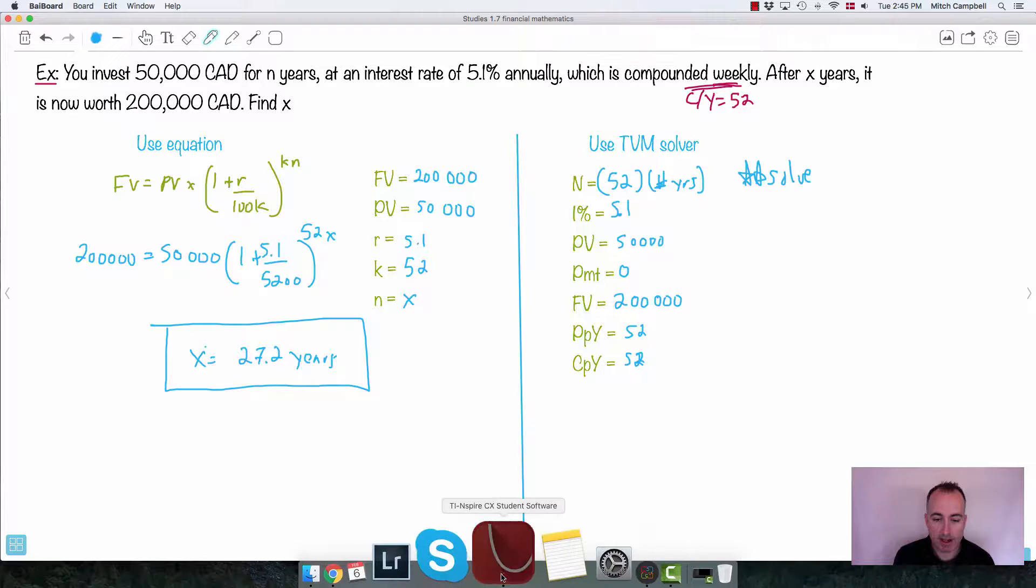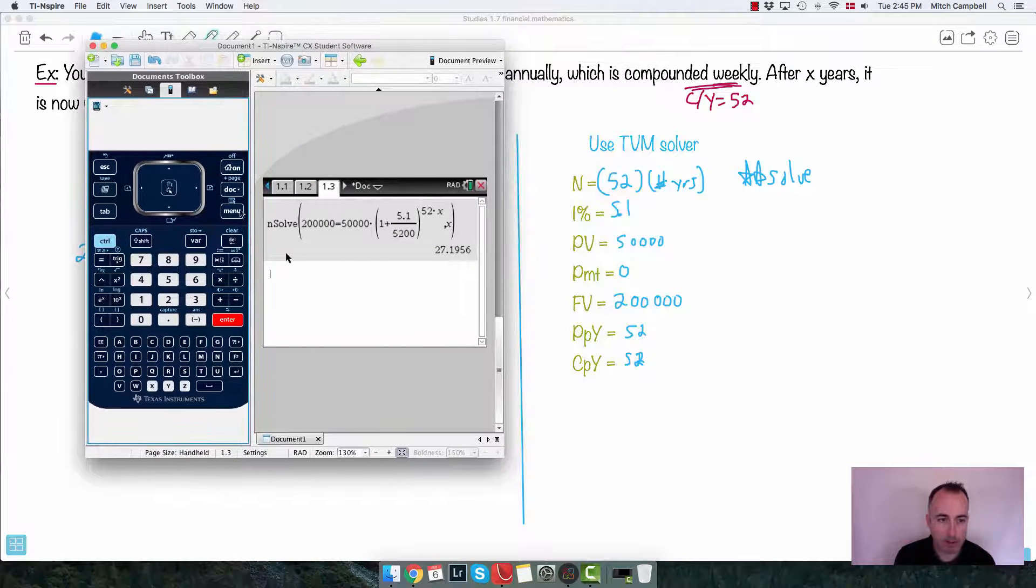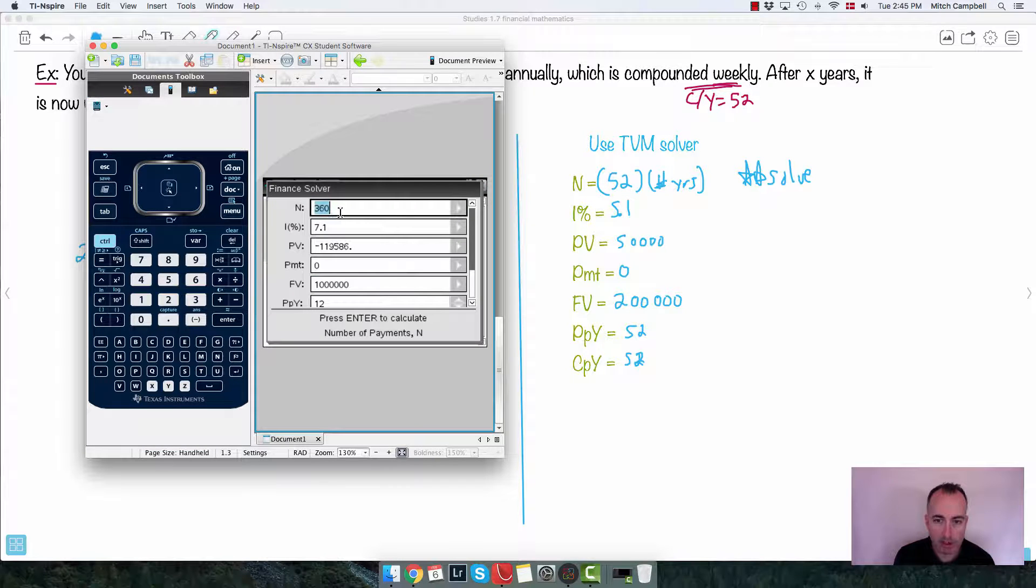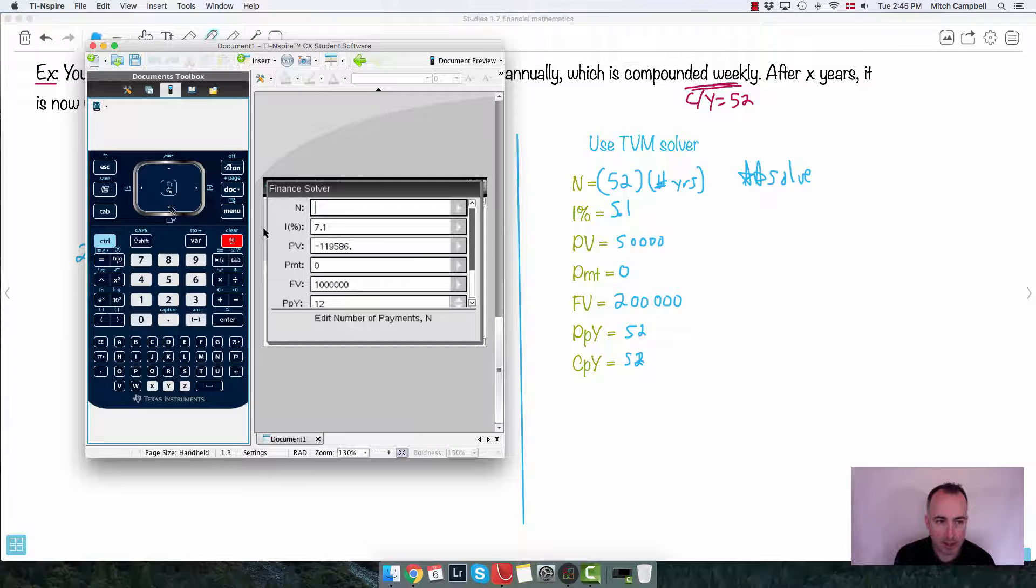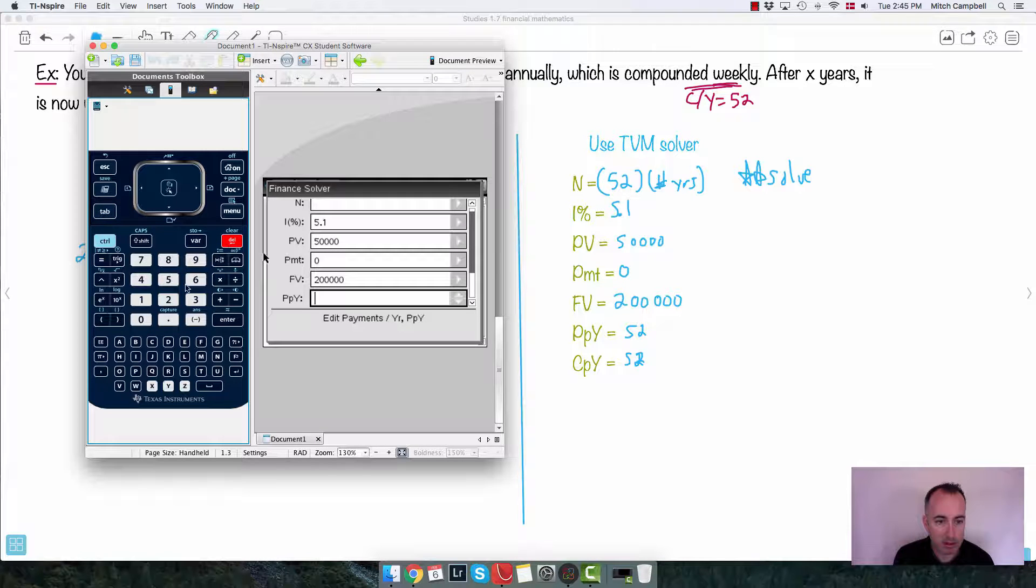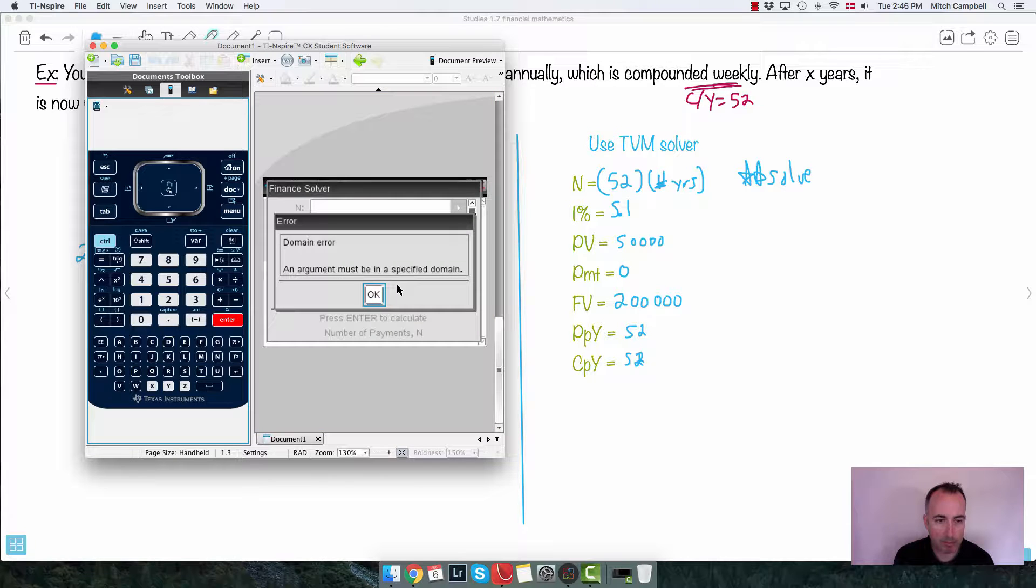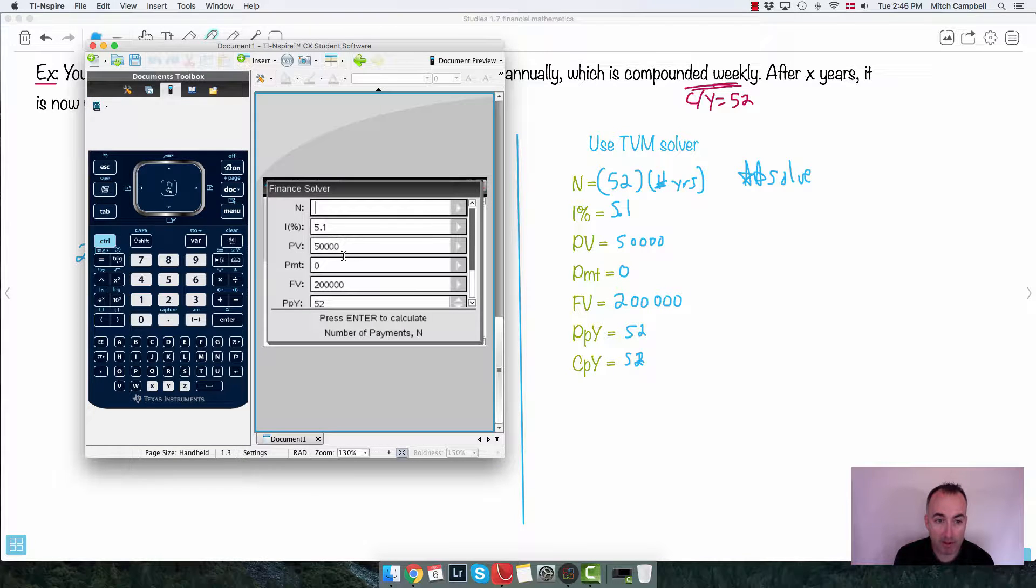Here's the interesting part. If I just run it like this, I actually want to show you what will happen. So we go right here. We go to menu, finance, finance solver. Let's put in these things here. I'm going to put in 5.1 here. Present value, I'm going to put in 50,000. I'm going to on purpose make a mistake. I'm going to make it 200,000. I put 52 here. I do 52. Everything seems good. So I'm going to go up here and then I'm going to say solve for N. It's going to give me an error. Something's wrong here. This is what commonly happens to students. Remember I said one of these has to be negative.